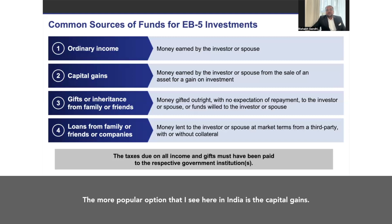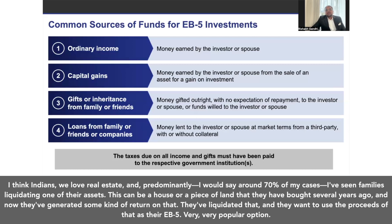The more popular option I see here in India is capital gains. Indians love real estate, and I would say around 70% of my cases involve families liquidating one of their assets — a house or a piece of land that they bought several years ago. They've generated some kind of return on that, liquidated it, and want to use the proceeds as their EB5. Very popular option.